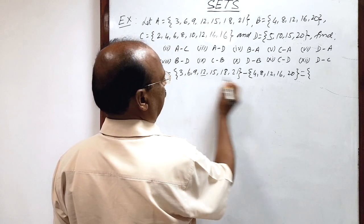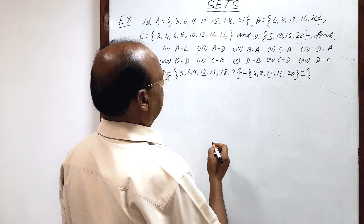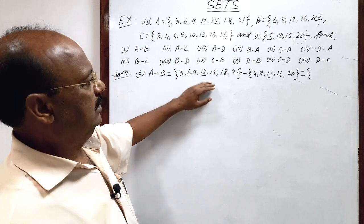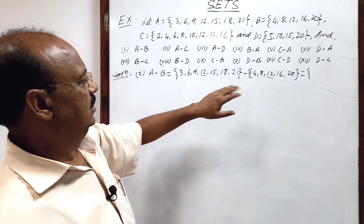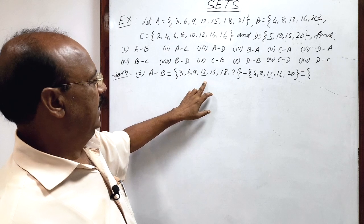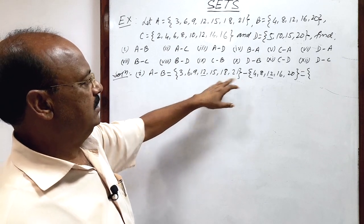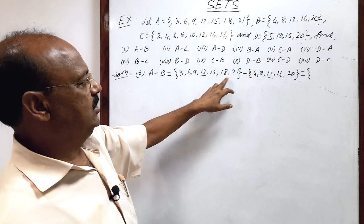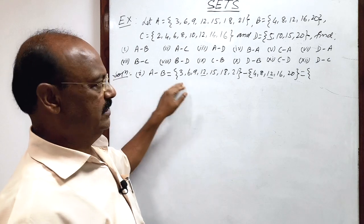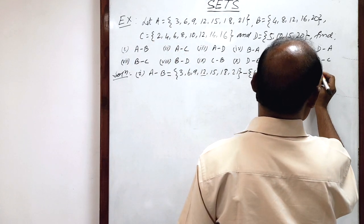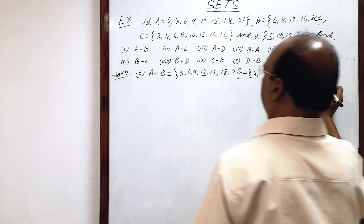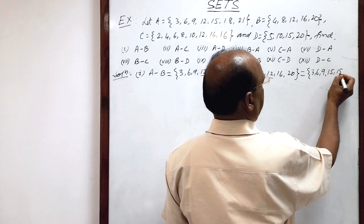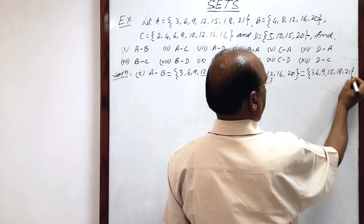12 is common, and no other element is common in these two sets. So this 12 will be removed from set A and we will write the remaining elements as the answer: 3, 6, 9, 15, 18, and 21 will remain in the answer for A minus B.